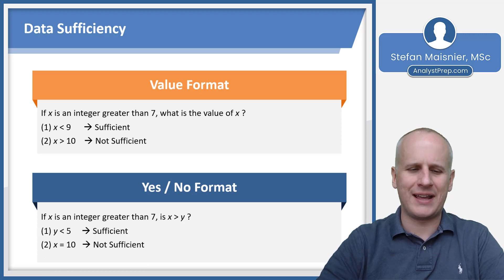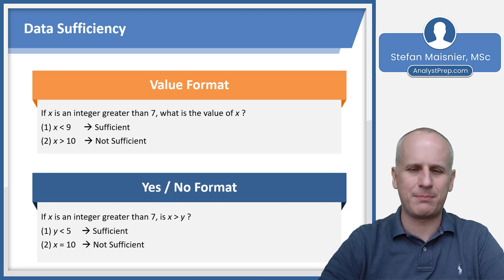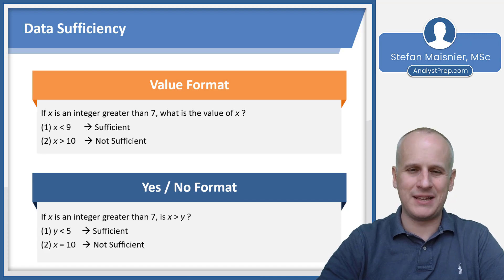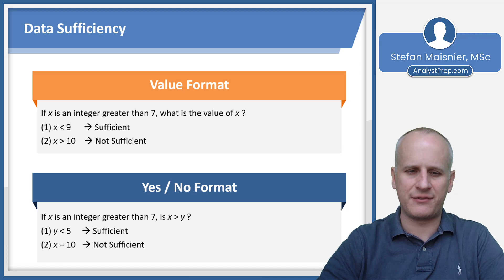Now, if we learn that x were equal to 10, that just gives more information about x but does not provide any corresponding information to relate that value for x of 10 to whatever y might be. So the answer could be yes or no. Because if x were 10 and y were 20, the answer to the question — is x greater than y — would be no. But if x were 10 and y were four, then the answer would be yes. And because each answer, yes and no, is possible, statement 2 is not sufficient.